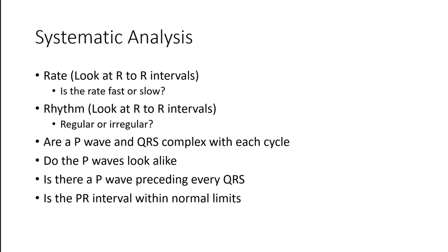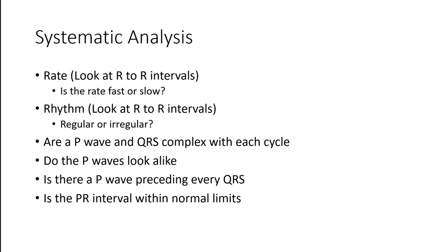Do the P waves look alike? Are they funky looking? Is there a P wave preceding every QRS? Do we see one in each cycle and is it before each cycle? Is the PR interval within normal limits? Is the QRS duration within normal limits? We know that should be very short — at most three small boxes or 0.12 seconds. And then: does the rhythm come from the SA node, the AV node, or the ventricles?